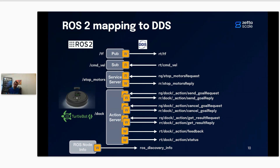What this means on DDS is that at each declaration of an action server — and symmetrically for an action client — there are eight readers and writers created for each action. You can imagine the implication for discovery. That's why in a robot like a TurtleBot with just a few actions and services, we end up with several hundreds of readers and writers declared in DDS. Additionally, ROS publishes one specific topic — ROS discovery info — which allows ROS to reconstruct the ROS graph.